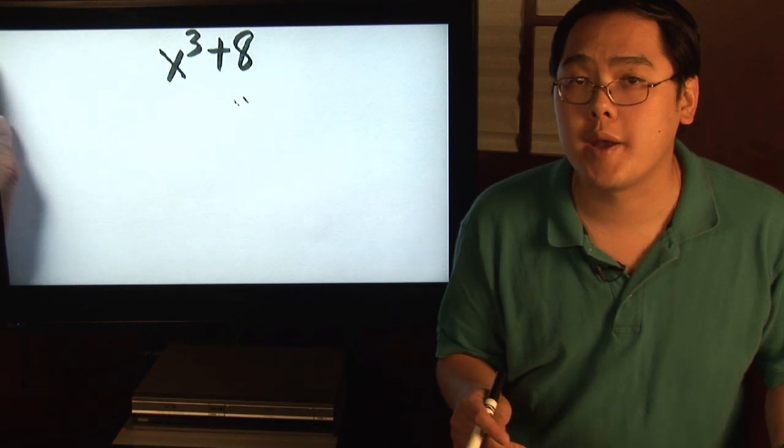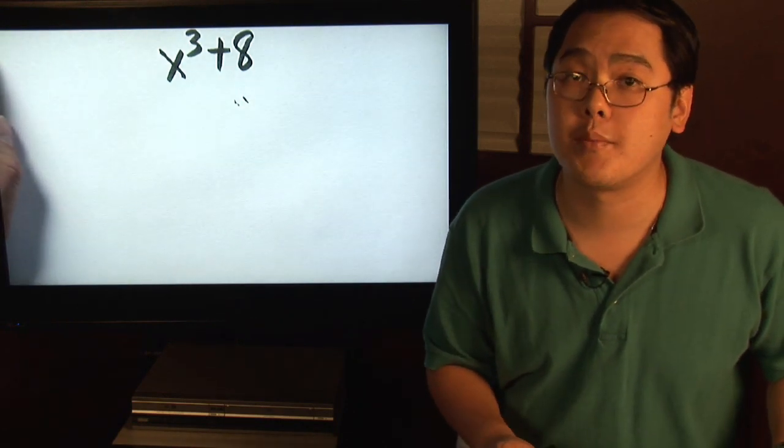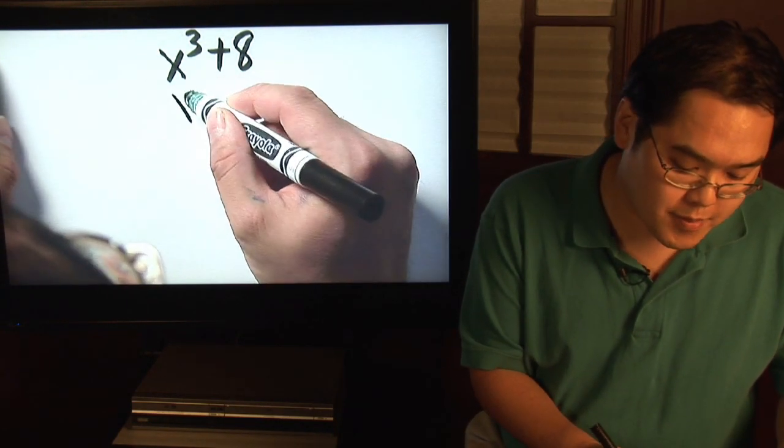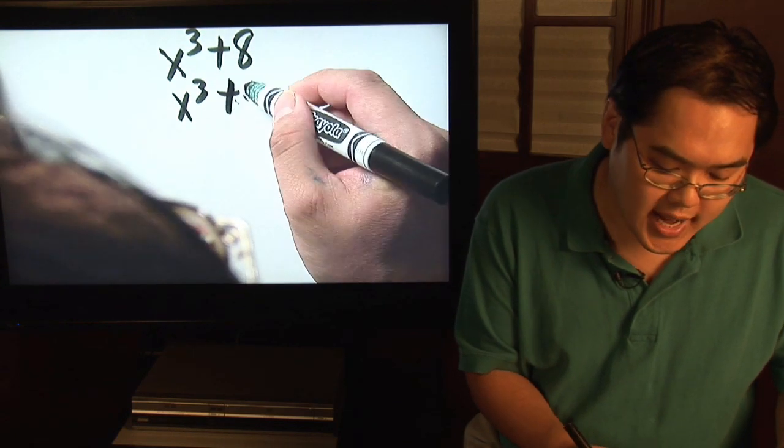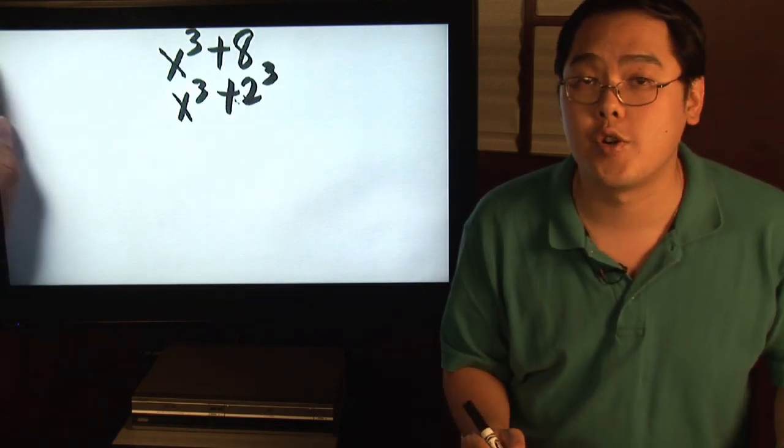In other words, one number multiplied by itself three times is going to give you the number eight. Well, after some thought you'll come to the conclusion that eight is indeed two to the third power.